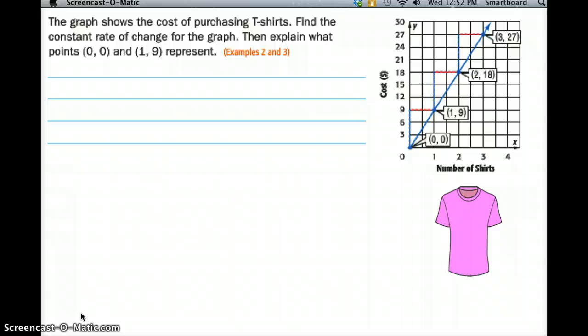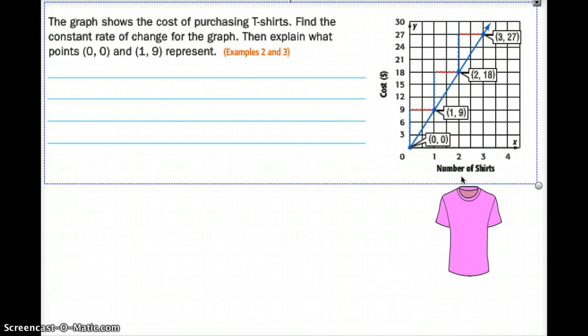Here's another example to find the rate of change using a graph. We have a graph here that talks about the number of shirts and how much it costs. So it's dollars per shirt. The graph shows the cost of purchasing t-shirts. Find the constant rate of change for the graph and then explain what (0,0) and (1,9) represent.